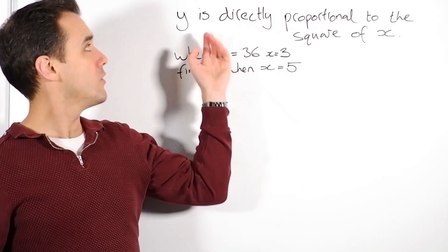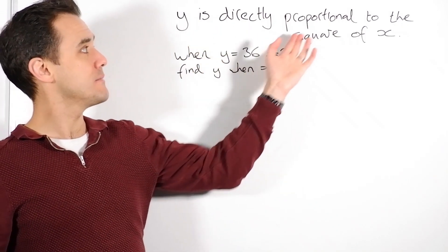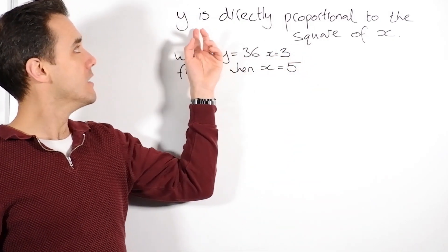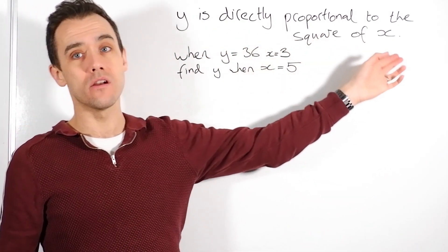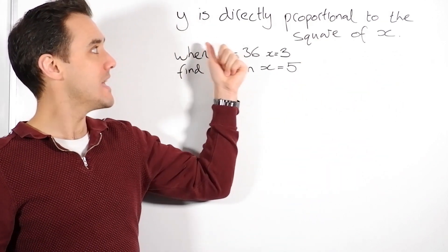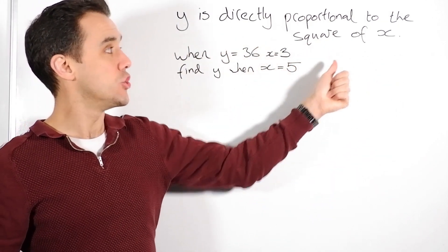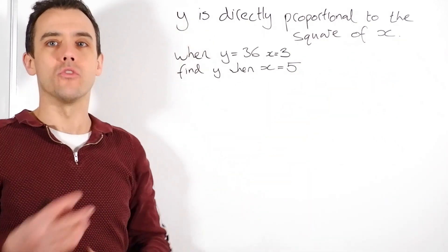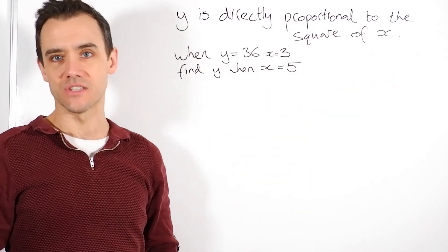So how do we tackle them? Well, we're always told it generally like this. So y is directly proportional to the square of x. Now it doesn't have to be y and x. It could be p is directly proportional to the square of r. It could be z is directly proportional to the cube of p. It doesn't really matter what the numbers and letters are. The way we access it is the same.